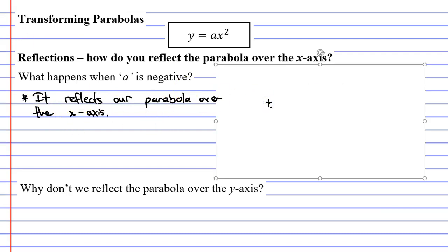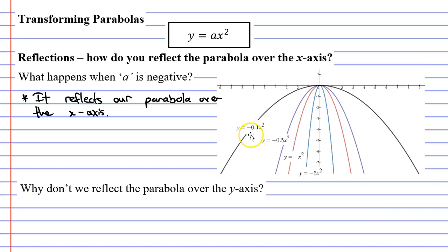Now, I have some images here of some parabolas that have a negative a value. And you'll notice that whenever a is negative, your parabola is a downward facing parabola. So we'd also like to make a note about that.